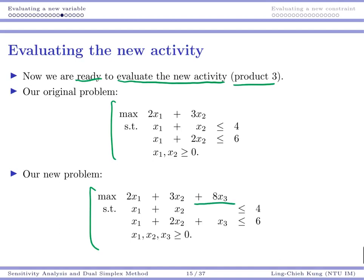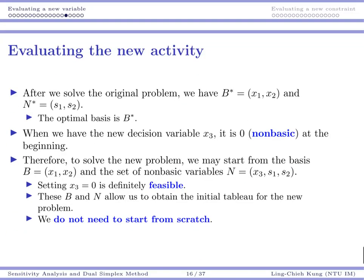Now after I solve my original problem, I do have an optimal tableau. I have an optimal basis. I know the optimal thing to do in my original problem is to set x1 and x2 as my basic variables. I produce both products, they are basic variables.